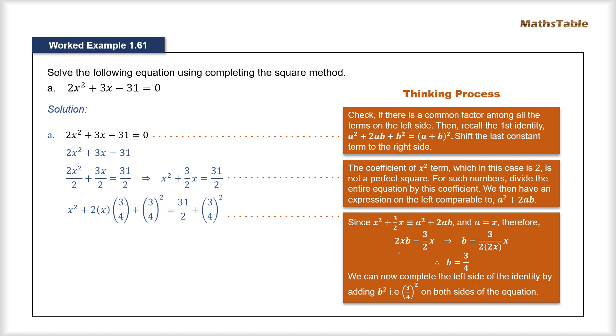Now we can substitute the value of a here which was x, so that b can easily be found out by simply dividing 2x on the other side. Now in this way x cancels out and we can simply get b equal to 3/4.